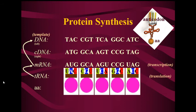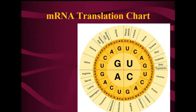When those tRNA molecules match their anticodon with the mRNA codon, each one is bringing an amino acid with it. We need to figure out what amino acid each tRNA brought. To do that, we use a translation chart. For these translation charts, you need to know how to use the chart — you do not need to memorize it. There are two different charts.